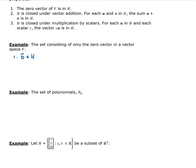For the second property, if we take two zero vectors and add them together — zero vector plus zero vector — we're obviously going to get the zero vector, and that's in H. So adding two zero vectors in H gives us back the zero vector in H. For the third property, take any scalar times zero, and you get back the zero vector, and that's in H. So it's pretty trivial.